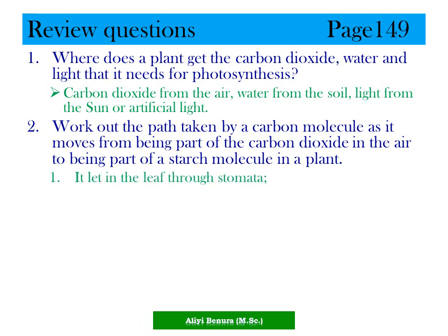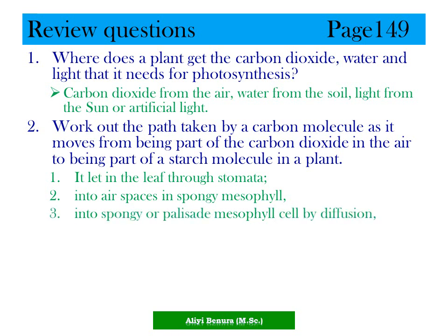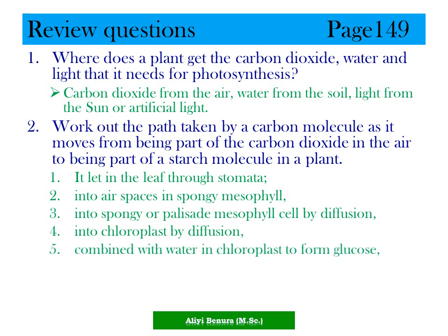First, it enters the leaf through stomata. Then it enters the airspace in the spongy mesophyll. Third, it enters the palisade mesophyll by diffusion. Fourth, it enters the chloroplast by diffusion. Fifth, it combines with water in the chloroplast to form glucose. Finally, it is converted into starch for storage or transported to other parts.